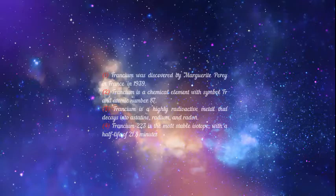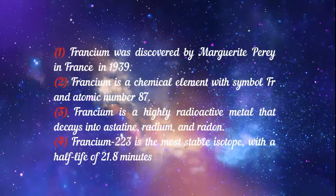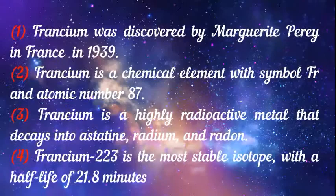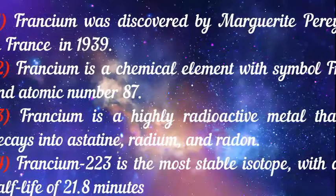Francium was discovered by Marguerite Perry in France in 1939. Francium is a chemical element with symbol Fr and atomic number 87. Francium is a highly radioactive metal that decays into astatine, radium and radon.